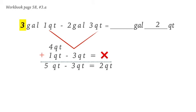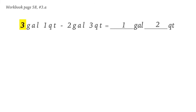After that, we can go ahead and solve for the gallons. So we have three gallons minus two gallons is one gallon, and we can just go ahead and write that in our answer. There you go! Our final answer is one gallon and two quarts.